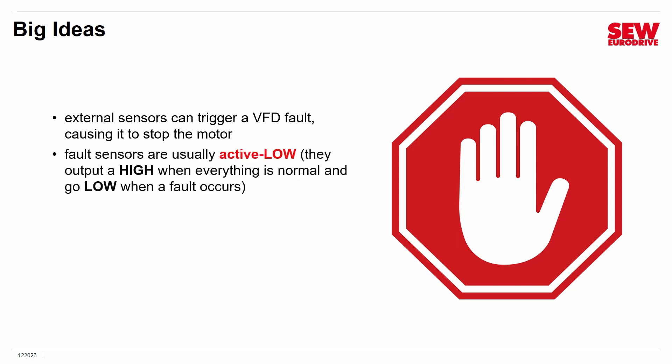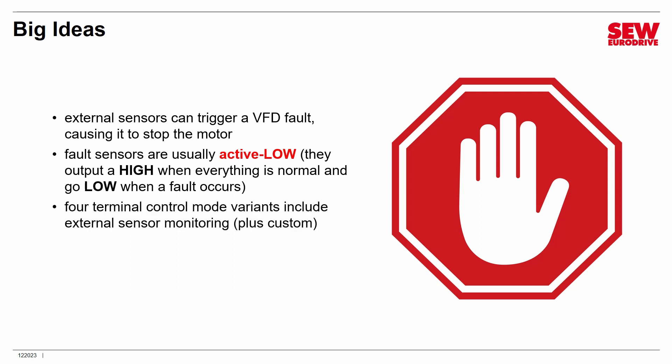Fault sensors are usually active low — they behave like a normally closed switch. When everything is normal they're outputting a high signal; they go low when the fault occurs, like a normally closed switch that opens. The MobiTrack LTP-B supports four different terminal control variants that can monitor an external sensor, plus a totally custom one, so really five — but we'll be looking at the four predefined ones.